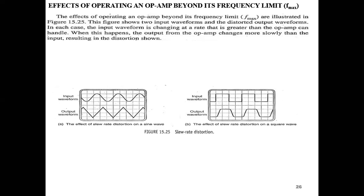The maximum operating frequency found is 5 kHz. If we give it 6 kHz or above 5 kHz, then the wave shape of our output changes — this is called slew rate distortion. If the frequency changes beyond the maximum, the output waveform is distorted.